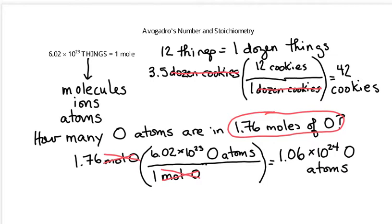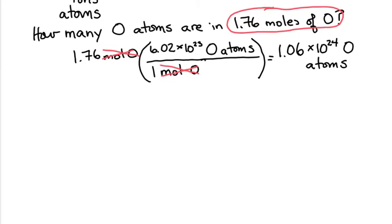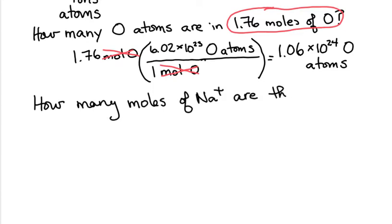We can use Avogadro's number to go the other way. We can go with a question such as, how many moles of sodium ions are there if I have 7.34 times 10 to the 19th sodium ions.